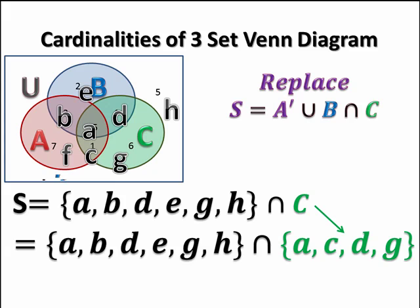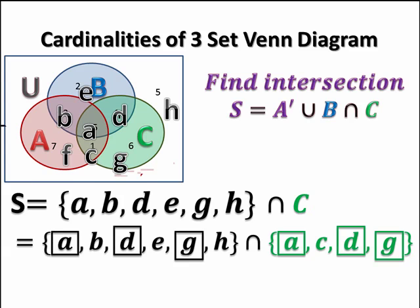Now intersection means the overlap. Just like two streets intersect on a roadway, our two sets are going to intersect in the regions they have in common. In this case, the regions they have in common are a, d, and g.